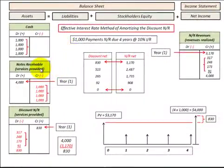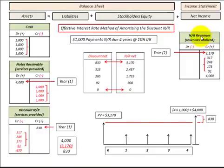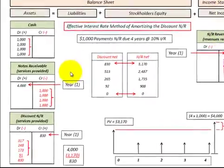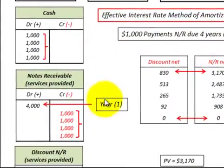Here we're going to look at notes receivable, which is an asset on the balance sheet, and how we recognize the revenues earned on that notes receivable, which is part of net income on the income statement. Now let's go look at our example.